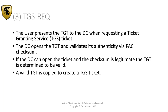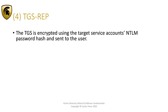When we request our TGS, the DC opens our TGT, validates the PAC and checks all the values. Once it says you're valid, it grants a TGS ticket using the password of that target host to protect the ticket. When I send that TGS to the host, the host uses its own NTLM hash to validate it, confirms it's really intended for it, and then grants access.